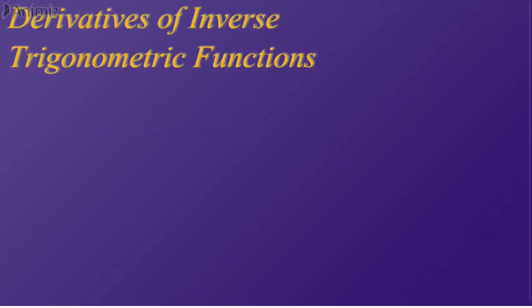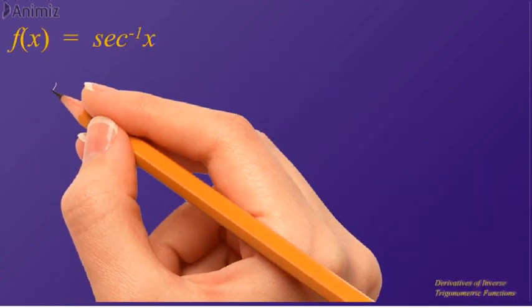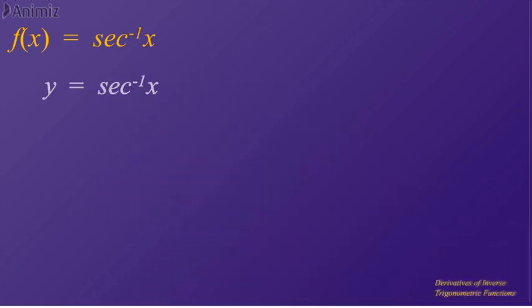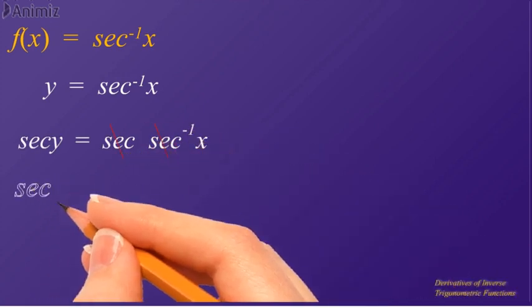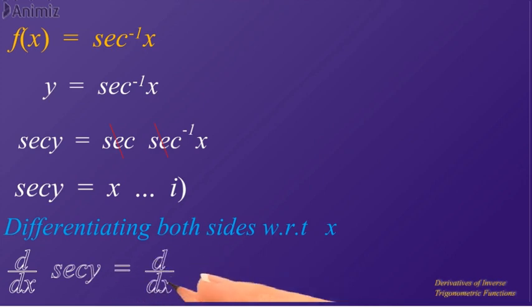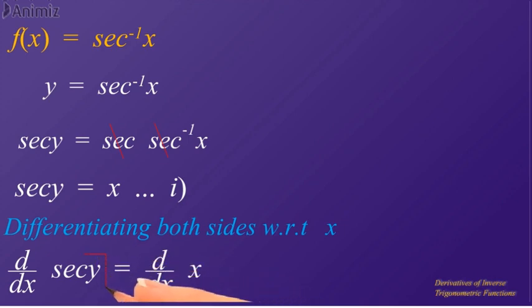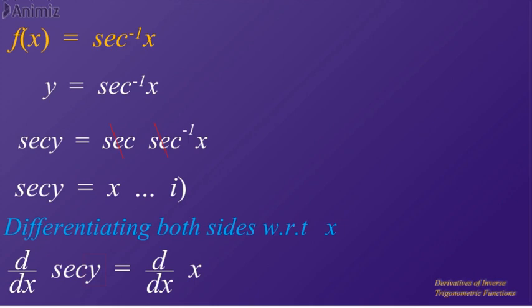Let's come to the derivative of secant inverse x. When f(x) is equal to secant inverse x, we can replace f(x) by y — that is, y is equal to secant inverse x. Applying secant on both sides, we get secant y is equal to x. Differentiating both sides with respect to x, that is d/dx of secant y is equal to d/dx of x. We are going to differentiate the secant function with respect to x, but it has y as its parameter. Therefore, according to the rules of derivatives, we write the derivative of secant function and in multiplication we write the derivative of y with respect to x.